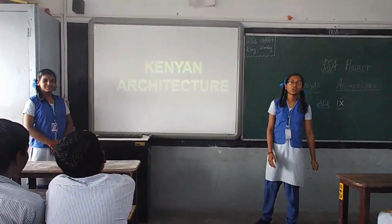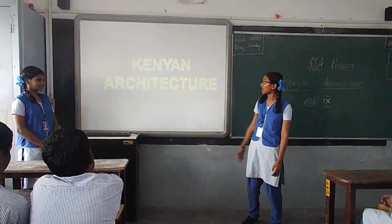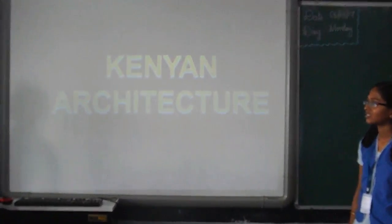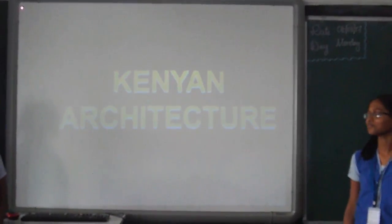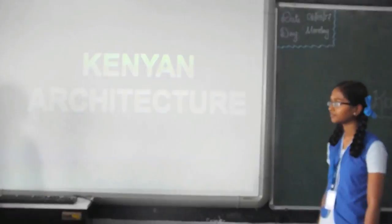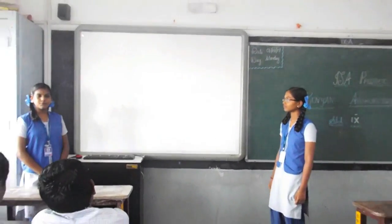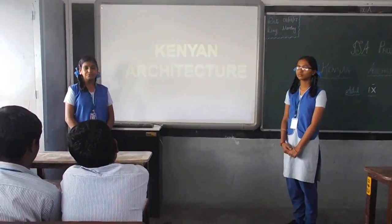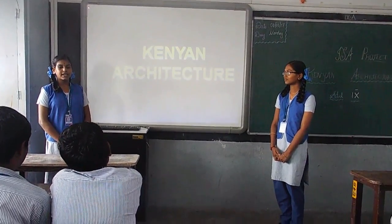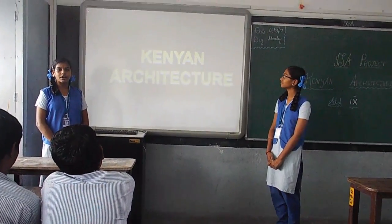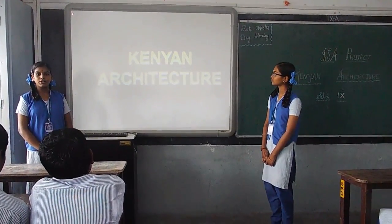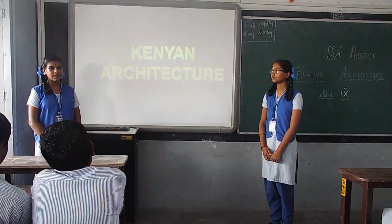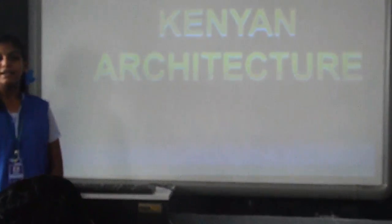We are going to see about our originator's architecture. Before that, shall we look at the location and geographical context of Kenya. Kenya is located on the eastern part of Africa. It is a developing country, because most of the African countries were colonized by the British. Even though they developed later, they are much more developed now.